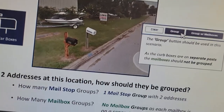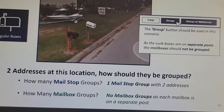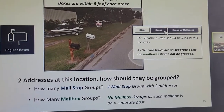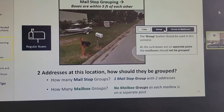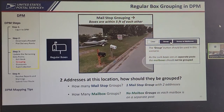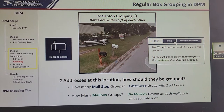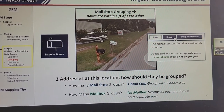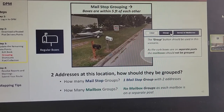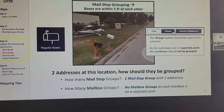The next example has two boxes that are clearly within five feet of one another, but they are separated by a little distance. The carrier probably can't get both boxes at one time and will have to pull up a bit to reach the second box. They're still within five feet, so you have to group them. However, because there are a couple of feet between them — though still less than five feet — you would only group the mail stops, not the mailboxes, since they are on separate posts.